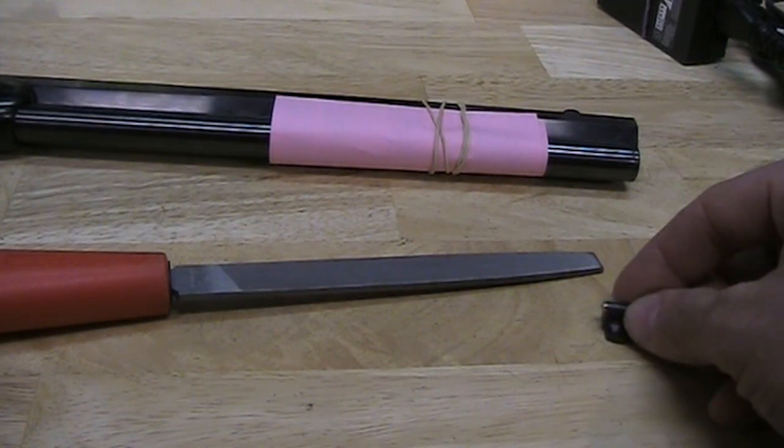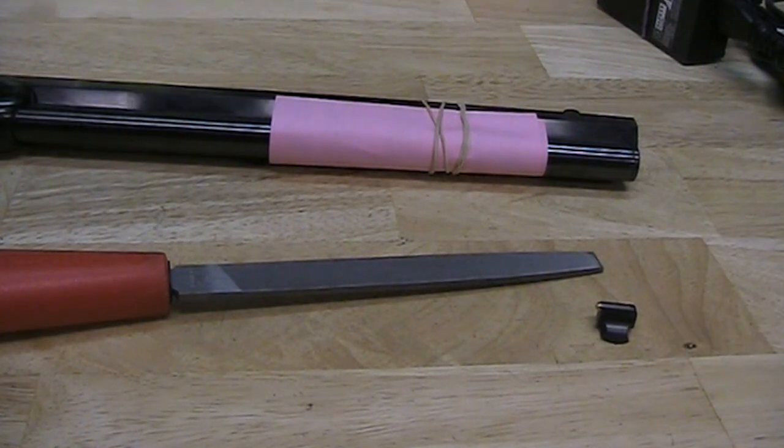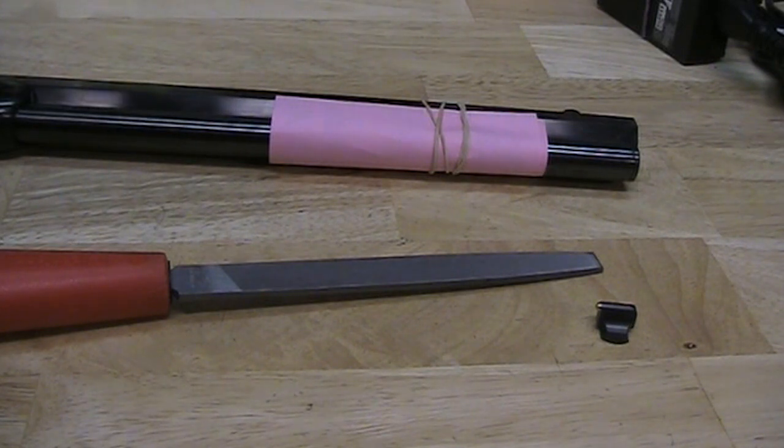One misconception that I've heard from a lot of our customers and people in general is that the front sight has to be tapped into the front sight dovetail slot from one side or the other. That is not true. There is no taper to the dovetail cut itself; you can install it from either side.